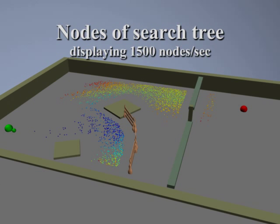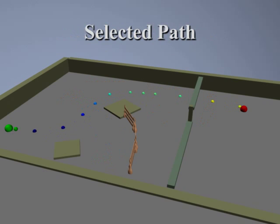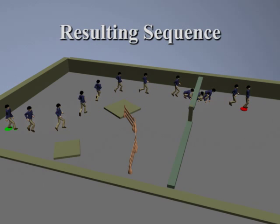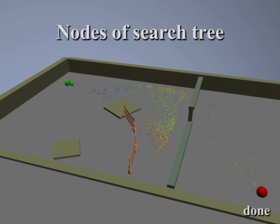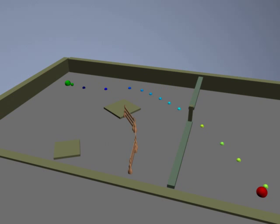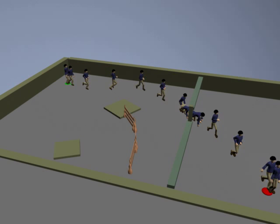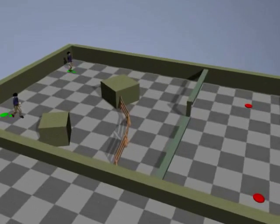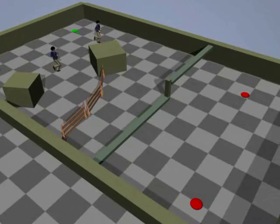Here is a visualization of the A-star search process. Here is the search for a second character. The search assumes that the first character is a moving obstacle in the environment. And here is the resulting animation for both characters.